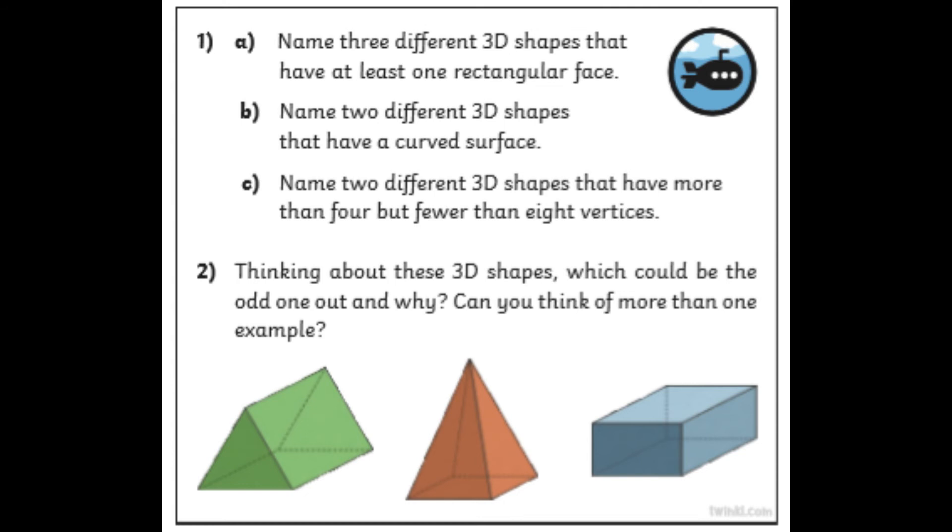Number two: thinking about these 3D shapes, which could be the odd one out and why? And can you think of more than one example? So like we did together, could each one be the odd one out for a different reason? So I think shape number one is the odd one out because, and then give you a reason. That's what we're looking for there.